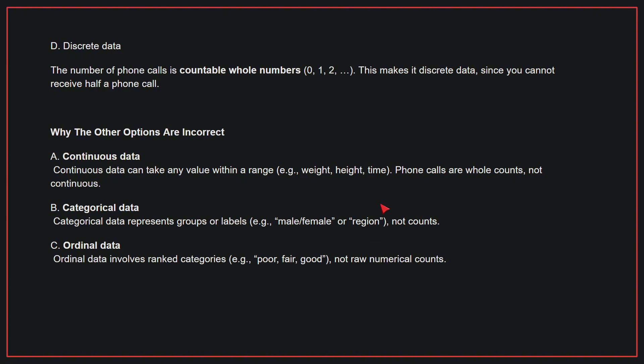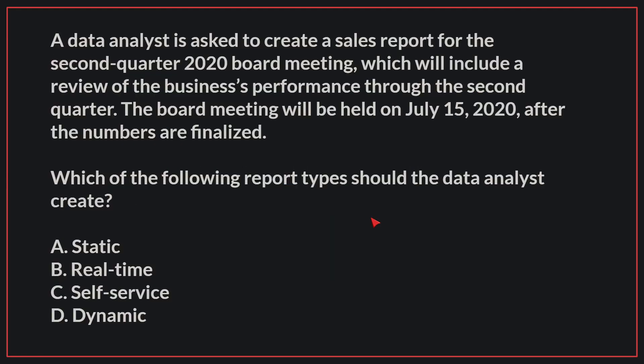Why the other options are incorrect? A: Continuous data. Continuous data can take any value within a range — phone calls are whole counts, not continuous. B: Categorical data. Categorical data represents groups or labels, not counts. C: Ordinal data. Ordinal data involves ranked categories, not raw numerical counts. Therefore, the correct answer is D.